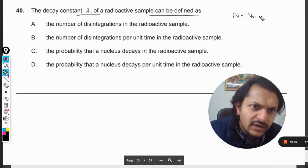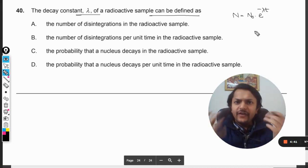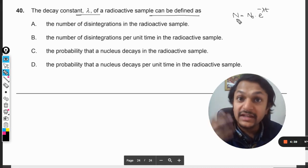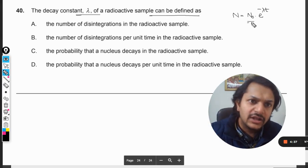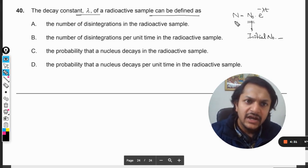I can give you one formula here. So this is the formula with which we find the number of nuclei left instantaneously. N₀ is the initial number of nuclei with which we had started radioactivity.